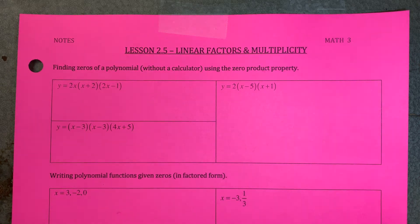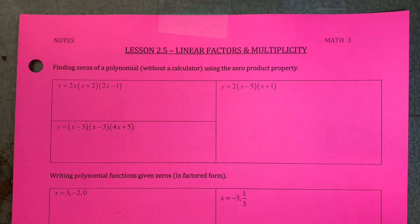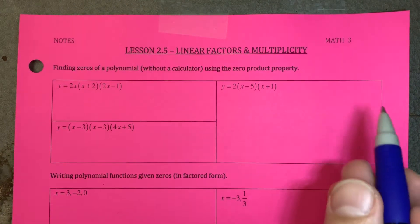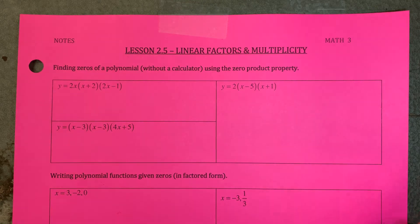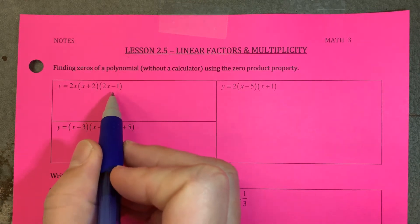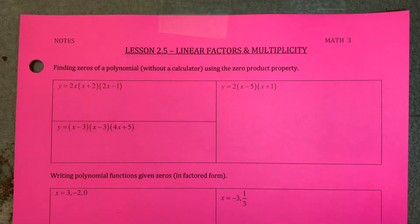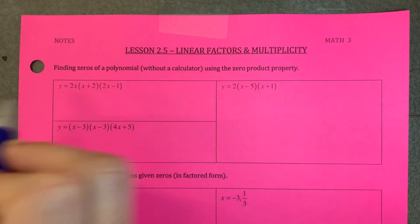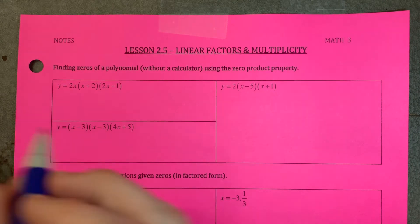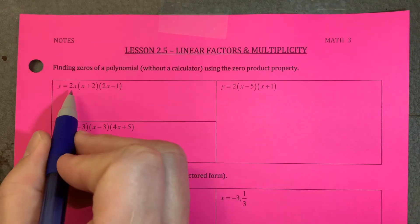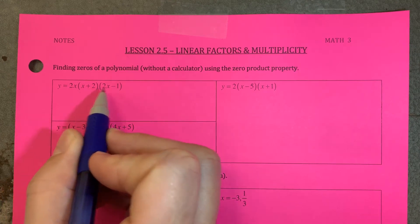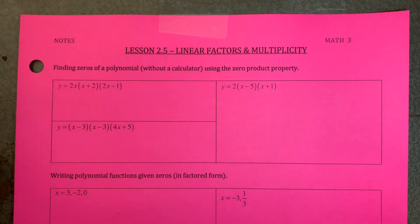Here's the lesson on 2.5 linear factors and multiplicity. I'm going to cover finding the zeros of a polynomial using the zero product property. That basically means you want to have your polynomial written in its factored form — not standard form. If it's in standard form, go ahead and factor it so you have these separate individual expressions. The zero product property means you take each individual expression and set each one equal to zero, then solve.